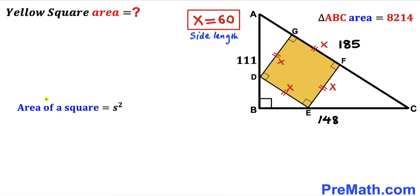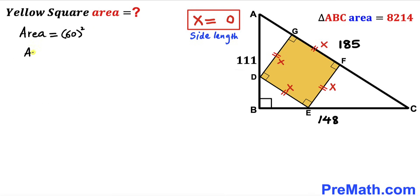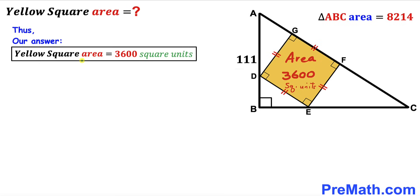Now let's calculate the area of the yellow square. Recalling the area of a square formula — area equals S squared where S is the side length — our side length is 60. So the area equals 60 squared, which simplifies to 3600 square units. The area of the yellow shaded square is 3600 square units.